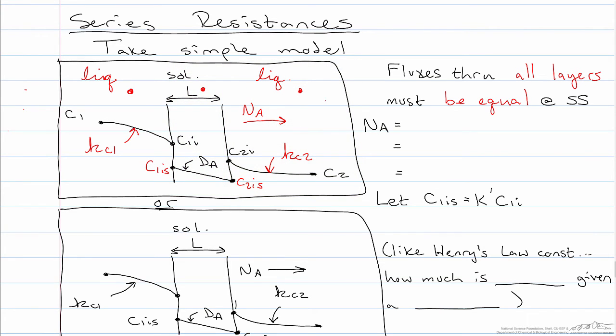So the flux on the feed side is proportional to, by a proportionality constant of Kc1, the concentration difference on the feed side.